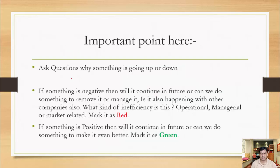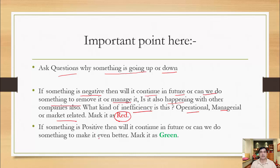Here again, you have to ask: why is something going up or why is something going down? If something is negative, will it continue in the future? Can we do something to remove or manage it? Is it happening with other companies also? What kind of inefficiency is it — operational, managerial, or market-related? Mark it as red and get into the annual report. Read about the business, the management discussion and analysis, to find the reason behind items going negative. If something is positive, mark it as green.